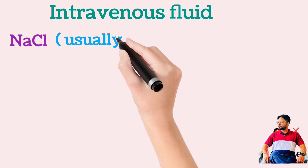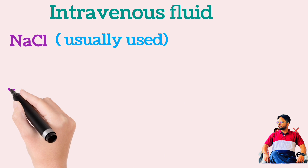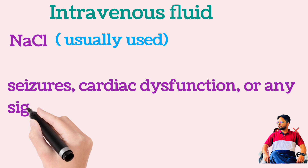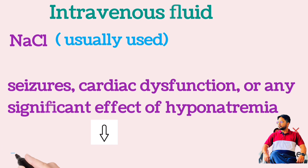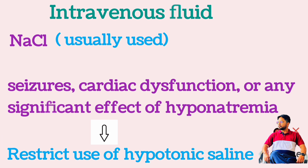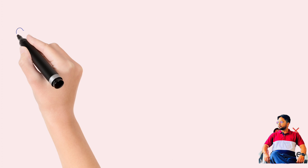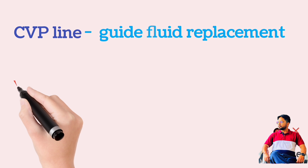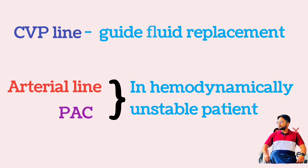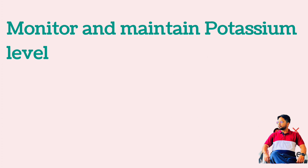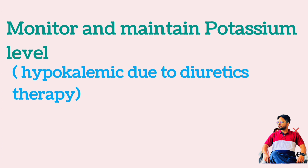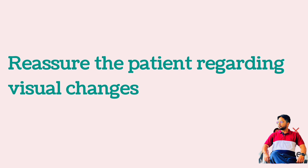Administer IV fluid with normal saline to maintain intravascular volume as diuresis progresses. If the patient demonstrates significant effects from hyponatremia, IV hypertonic saline may be appropriate; restrict its use to patients who have developed central seizures or cardiac dysfunction. Place a CVP line to guide fluid replacement. If hemodynamic instability develops, an arterial line and pulmonary artery catheter may be considered. Monitor and maintain serum potassium level, as patients often become hypokalemic due to diuretic therapy. Reassure the patient that symptoms, especially visual changes, are temporary and will dissipate as their condition improves.